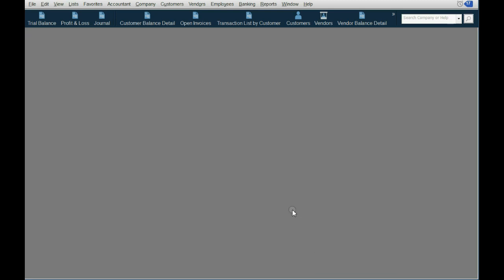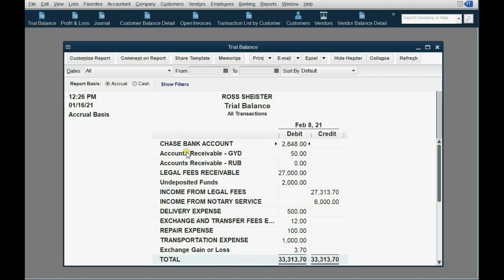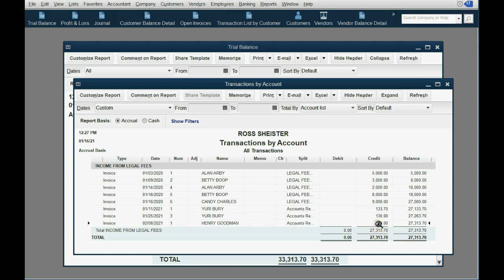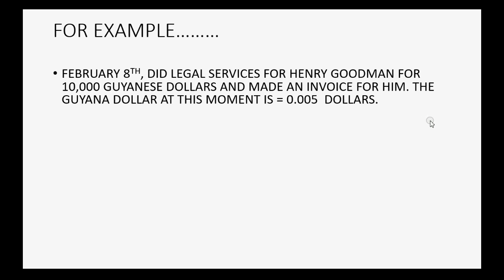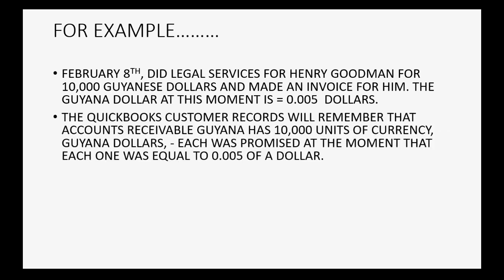When we click Save and Close, the trial balance reflects accounts receivable in Guyana dollars at $50, and income from legal fees has increased by $50 US dollars — equivalent to the 10,000 Guyanese dollars we just billed Henry for. The most important thing to learn regarding multi-currency in QuickBooks is that the customer records will remember that accounts receivable Guyana has 10,000 units of currency, and each was promised to us at the moment each unit was equal to $0.005 of a US dollar.